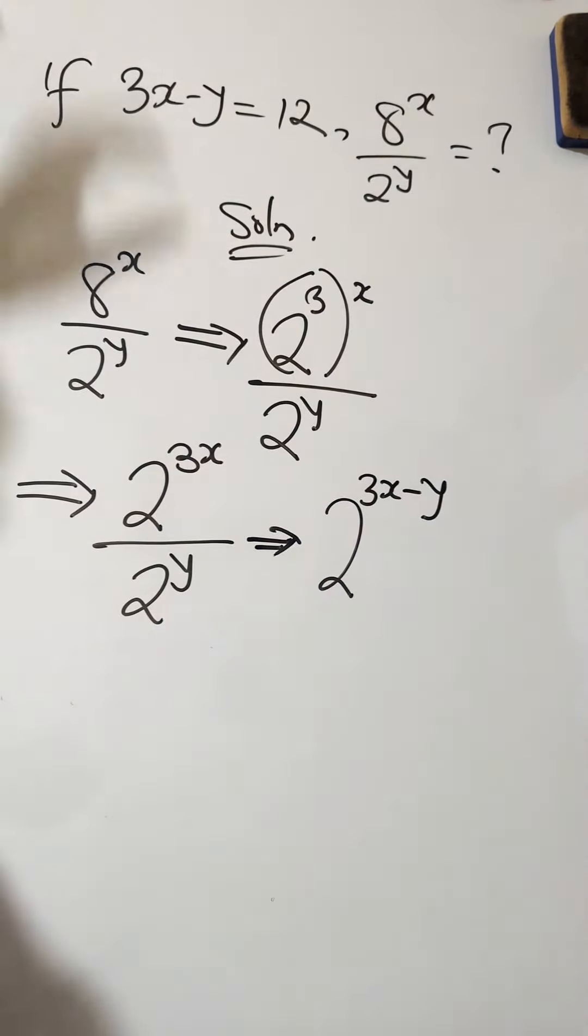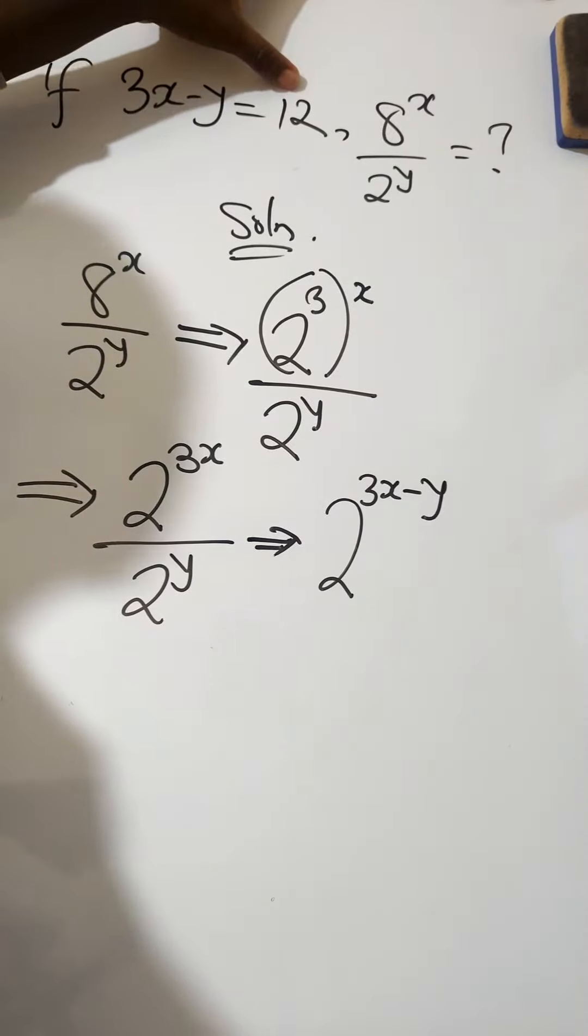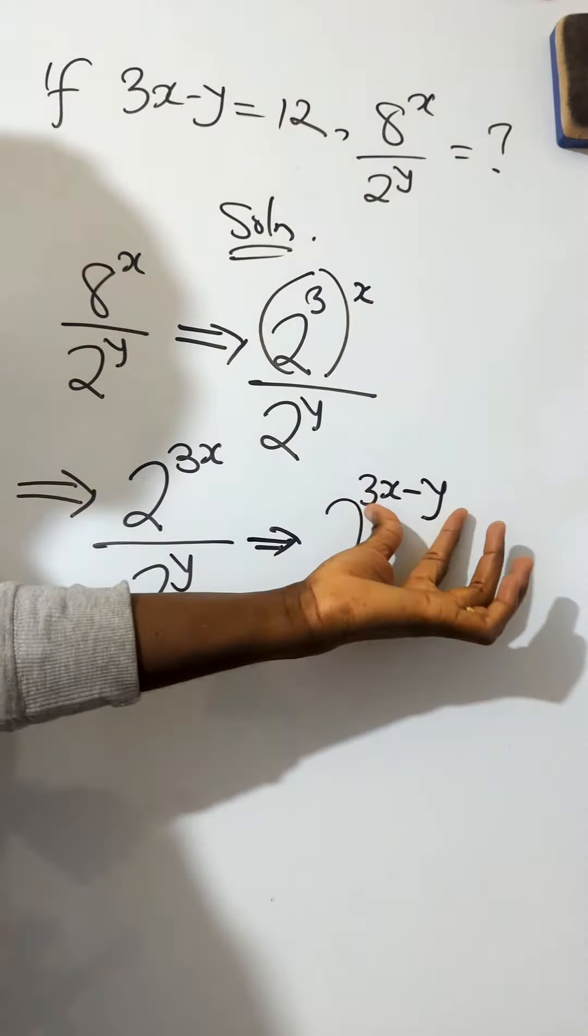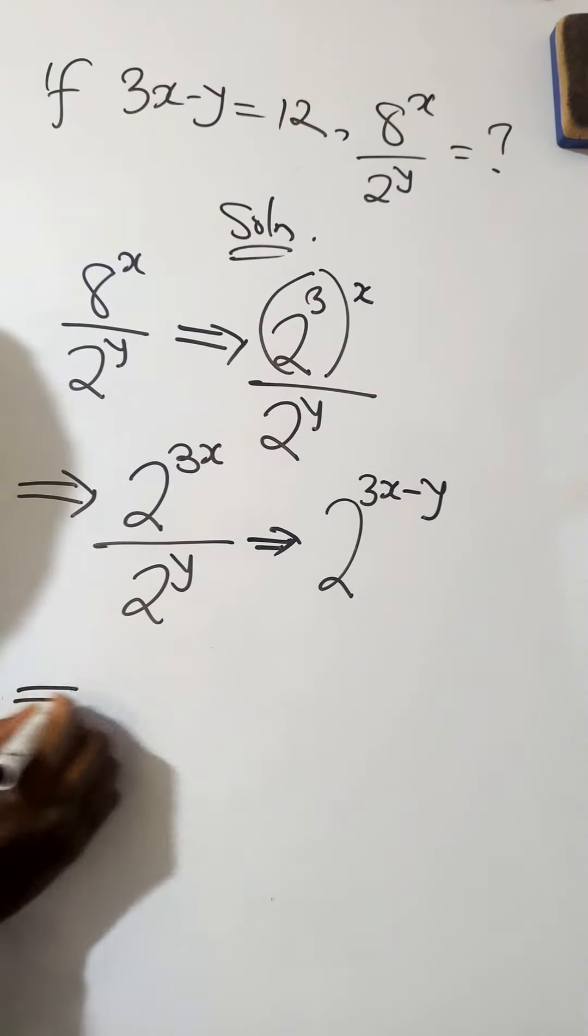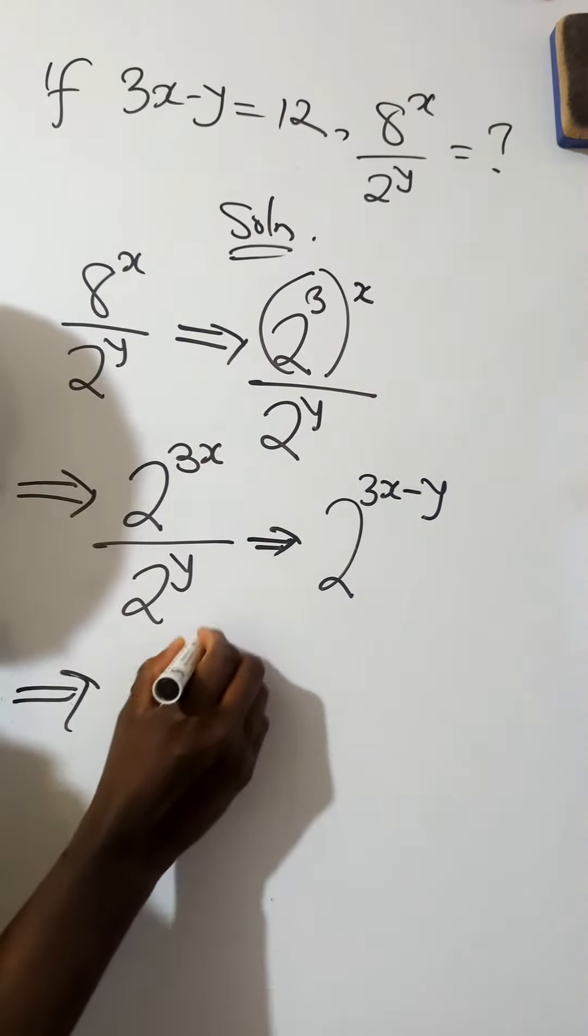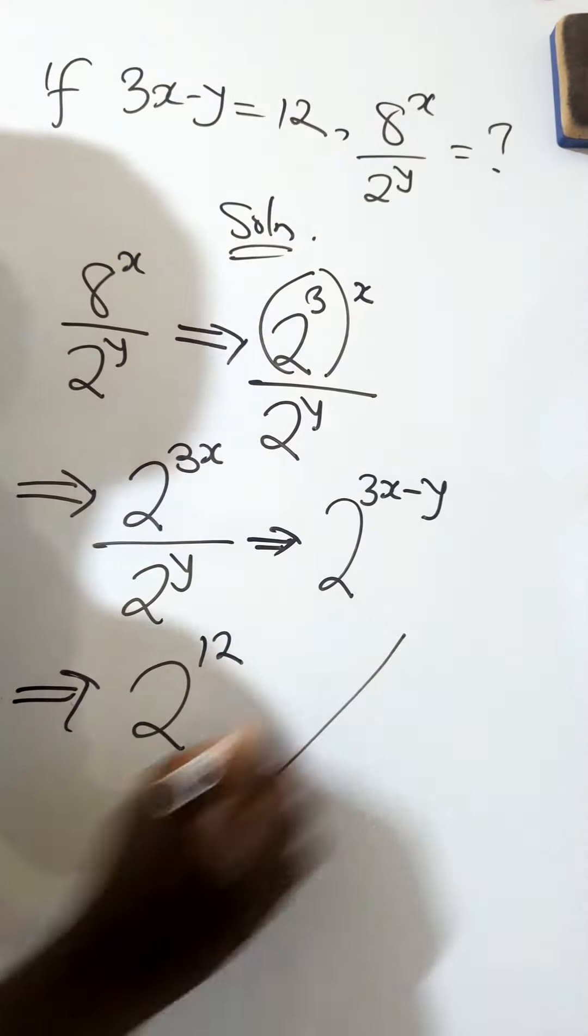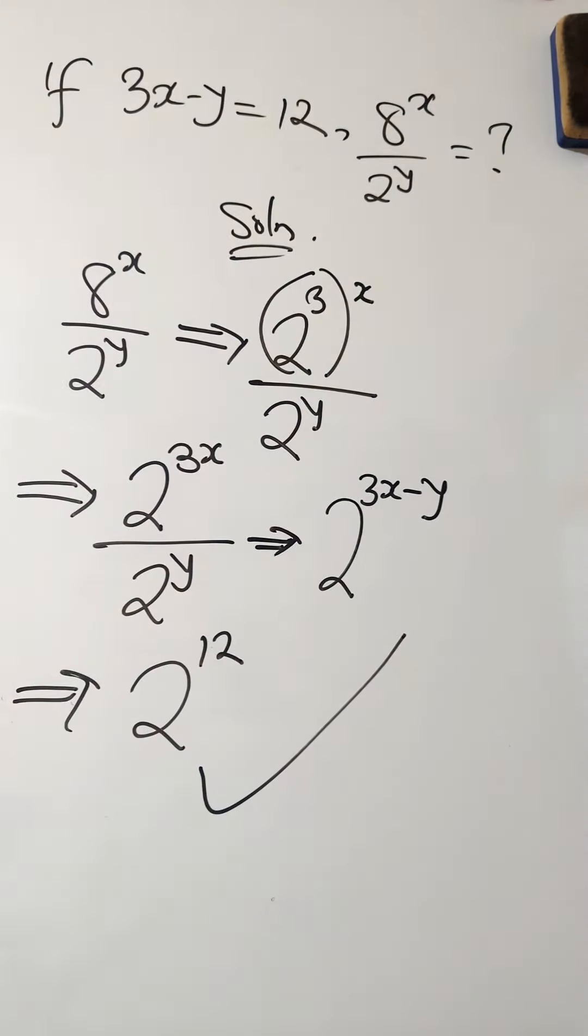But remember, 3x minus y is equals to 12. So, in place of 3x minus y, you substitute 12. So, we have 2 raised to power 12. And this is your final answer. Simple as always.